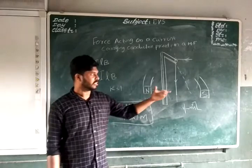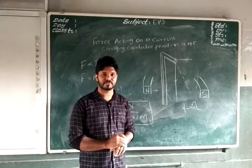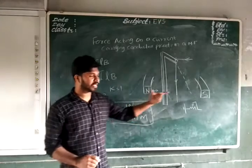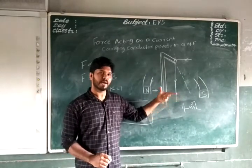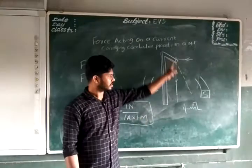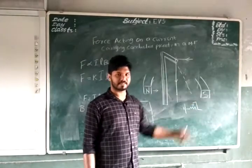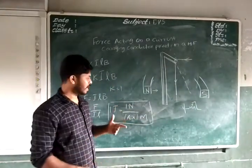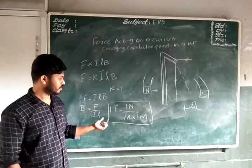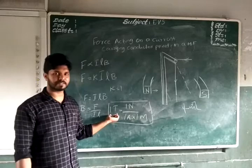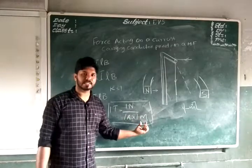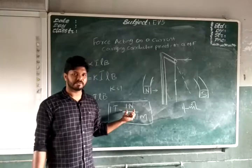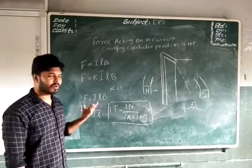Perpendicular means 90 degrees. When the conductor is placed parallel to the magnetic field there will be no force, so F is equivalent to zero if it is parallel. This formula is applicable only when the magnetic field and the conductor are perpendicular. The current flows downward and the magnetic field goes from north to south — they are perpendicular — so the formula applies here. One tesla is the magnitude of magnetic field if a conductor of one meter carries a current of one ampere and experiences a force of one newton when placed perpendicular to the magnetic field.